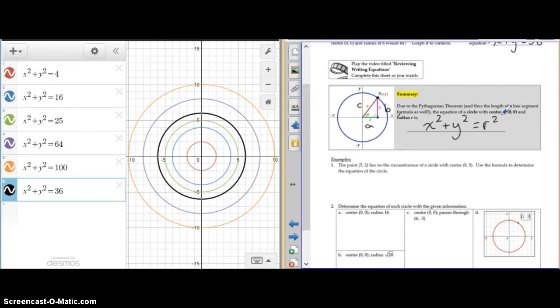This only works if your center is at 0, 0, and the r is the radius. So, again, the number after the equal sign is the radius squared.